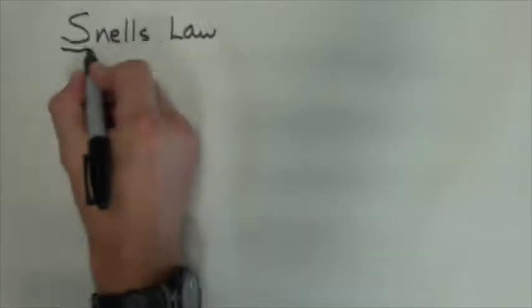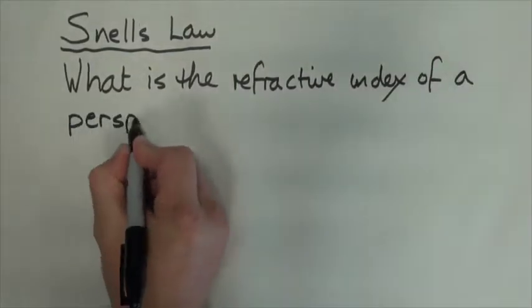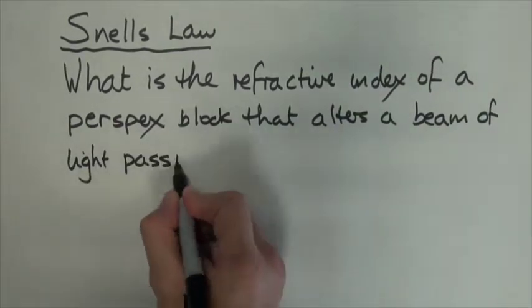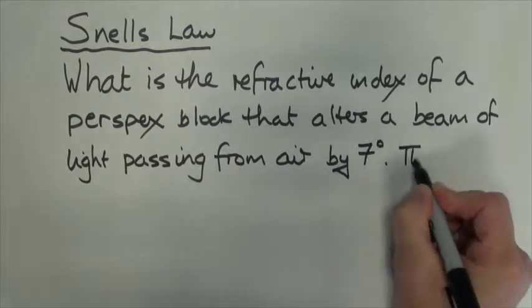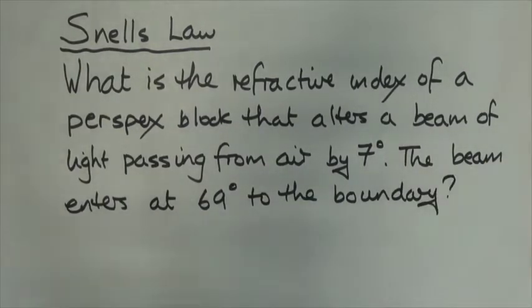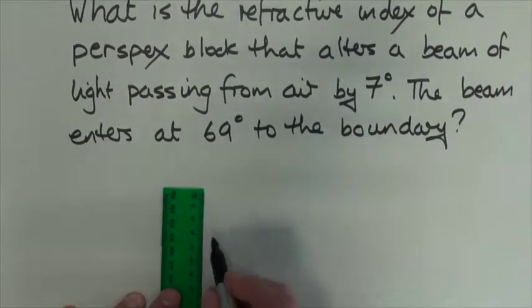In this video we're going to be looking at Snell's law. So let's set up a scenario. What is the refractive index of a perspex block that alters a beam of light passing from air by seven degrees? The beam of light enters at 69 degrees to the boundary. Well, let's start off by drawing our diagram.